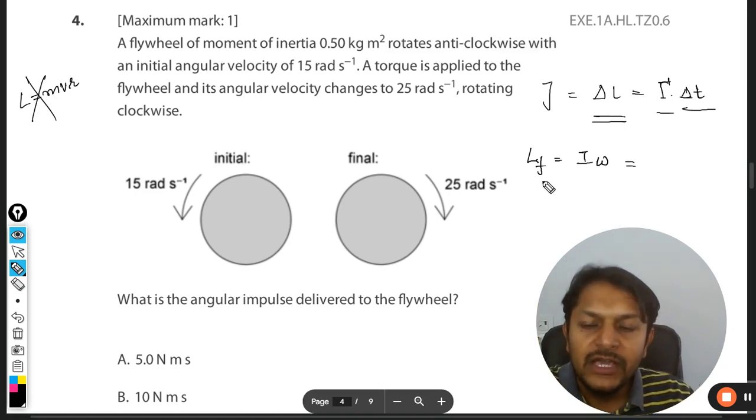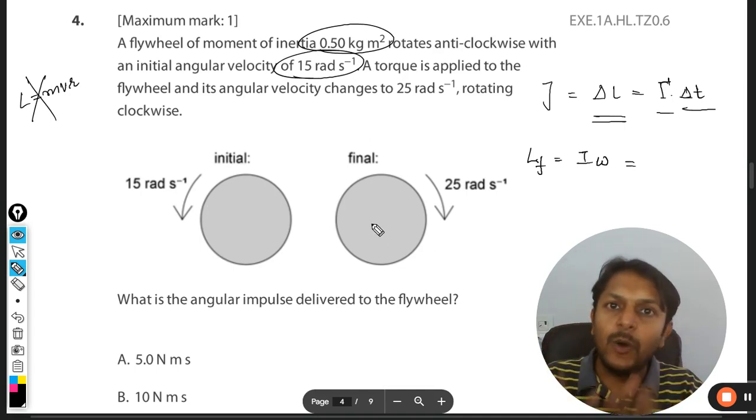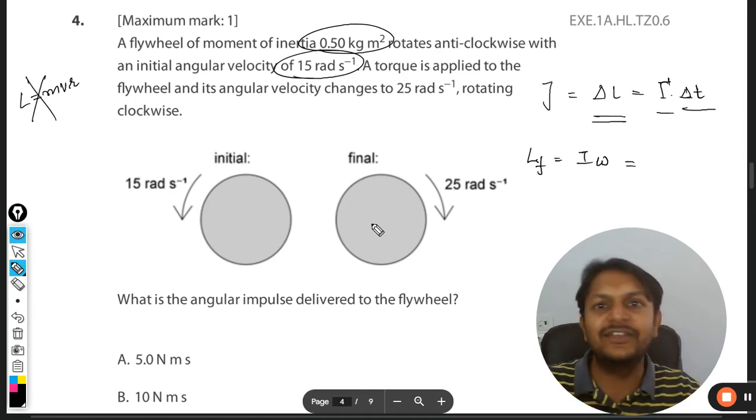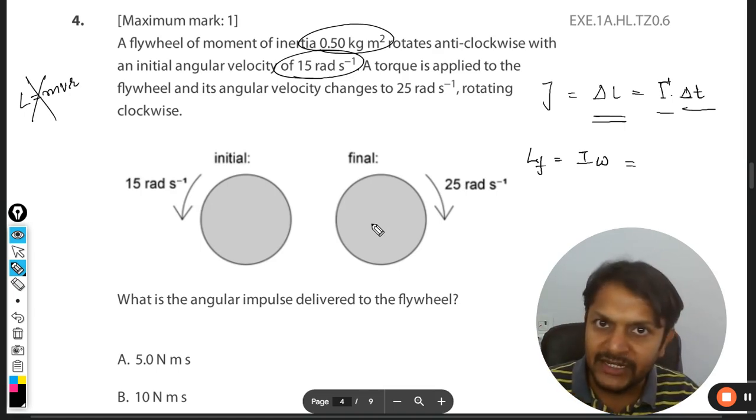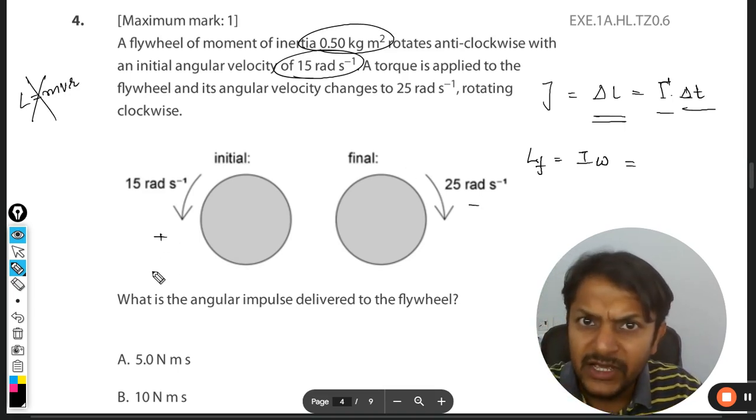So moment of inertia is 0.5 and omega is 15. This is anti-clockwise, this is clockwise. One direction out of these two has to be taken positive. You can choose any direction to be positive and any direction to be negative. Usually teachers are taking this as negative and this as positive. The anti-clockwise direction is taken positive.